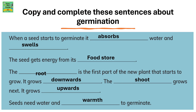Copy and complete these sentences about germination. When a seed starts to germinate, it absorbs water and swells. The seed gets energy from its food store. The root is the first part of the plant that starts to grow — it grows downwards into the soil. The shoot is the part that grows next; the shoot grows upwards. Seeds need water and warmth to germinate.